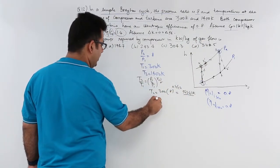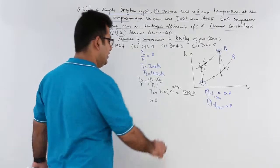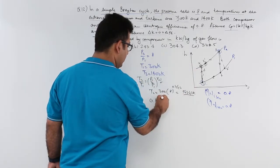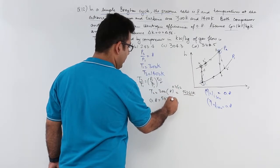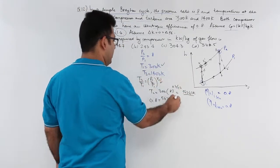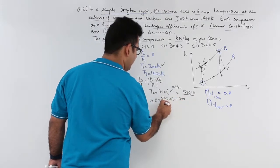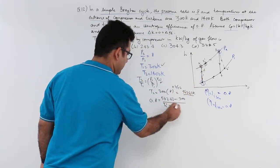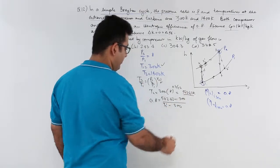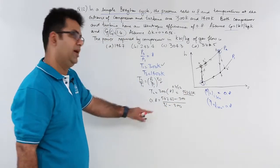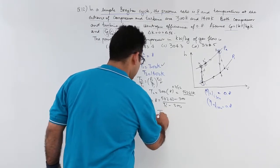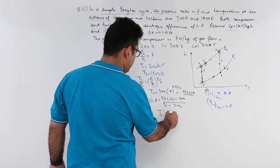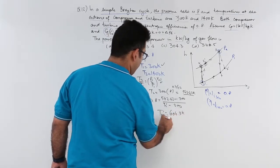So the efficiency is 0.8. The ideal temperature rise is T2 minus T1 which is 543.43 minus T1 which is 300. So from here you can find out the value for T2 dash. T2 dash comes about to be 604.3 kelvin.